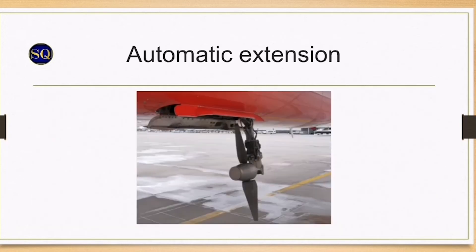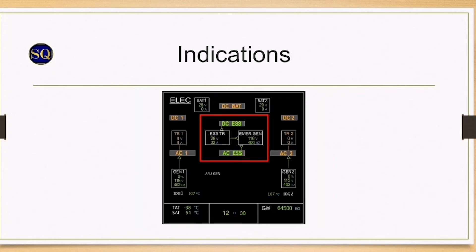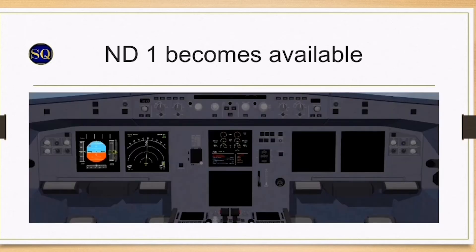The RAT — the Ram Air Turbine — automatically extends and powers the blue hydraulic circuit, which drives the emergency generator. This takes approximately 8 seconds. Once the RAT has dropped and powered up the emergency generator, the AC and DC essential shed buses are powered, and NAV 1 now becomes available.